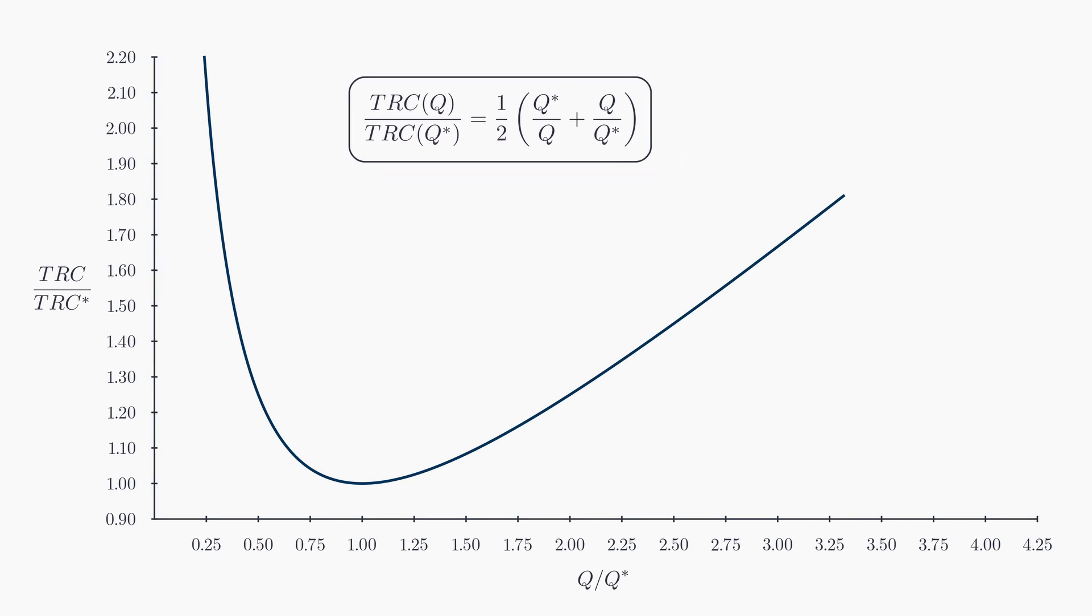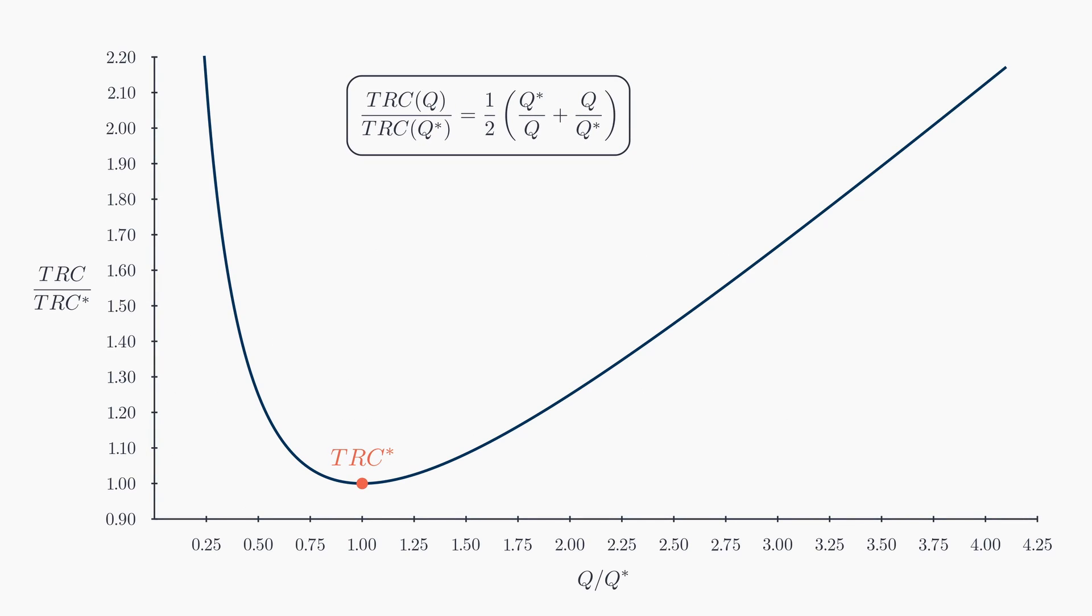Let's graph the sensitivity function to delve deeper into its behavior. Now, imagine our optimal order quantity is 750, but due to internal constraints, we can only order in multiples of 500. Choosing to round down to 500 units means we're ordering at 67% of the optimal order quantity, resulting in costs that are 8% higher. Conversely, rounding up to 1,000 units amounts to ordering 1.33 times the EOQ, which only increases costs by 4%.